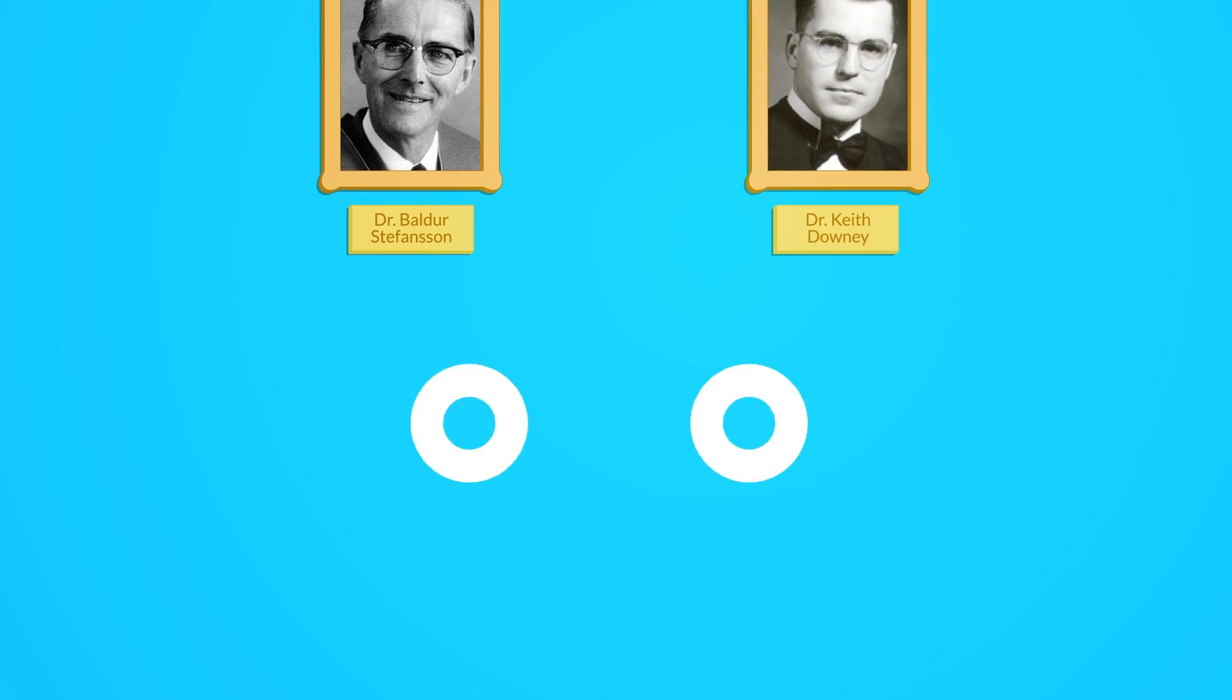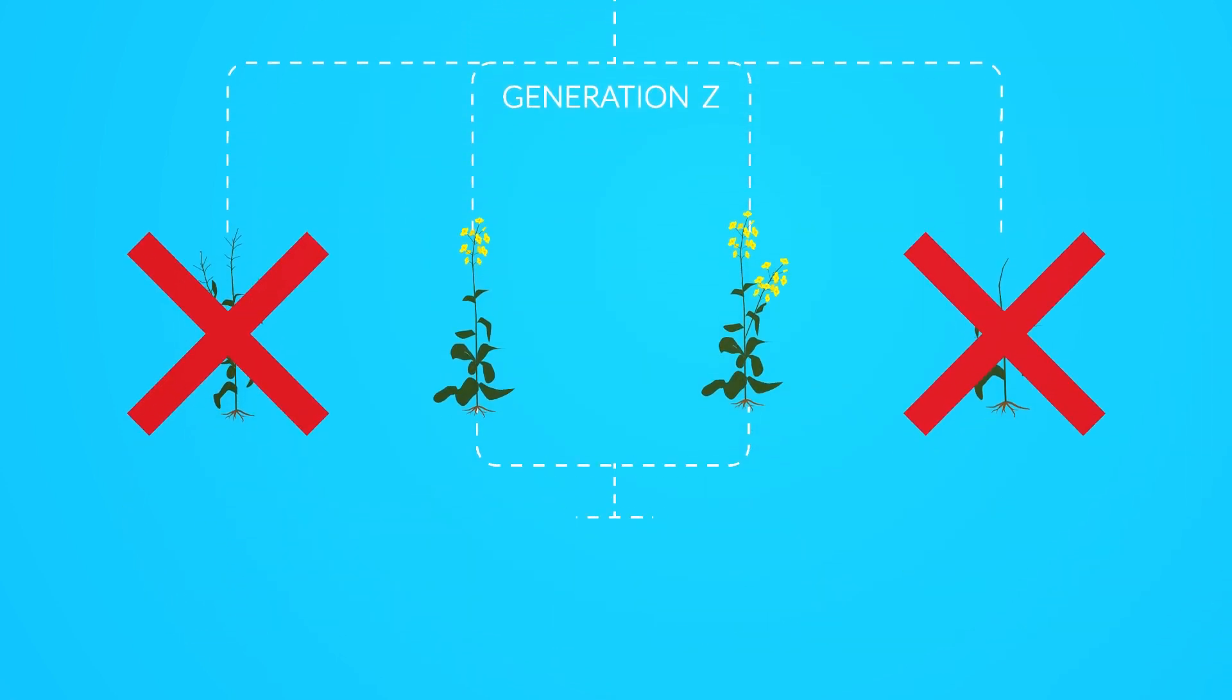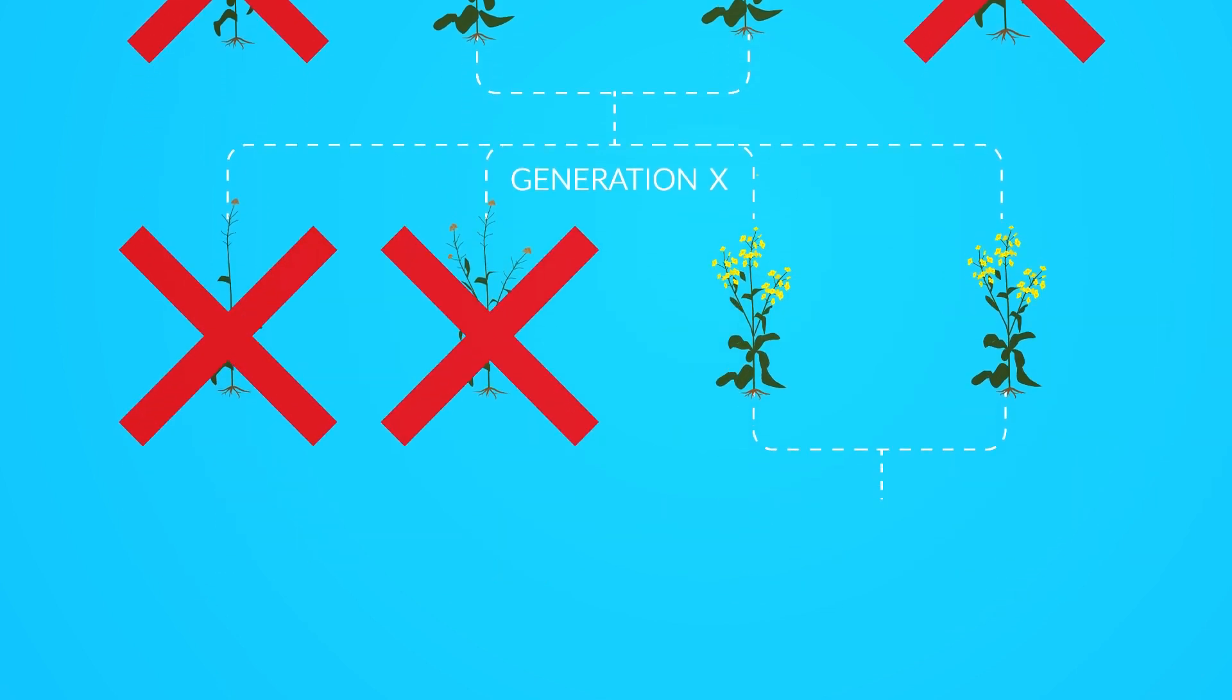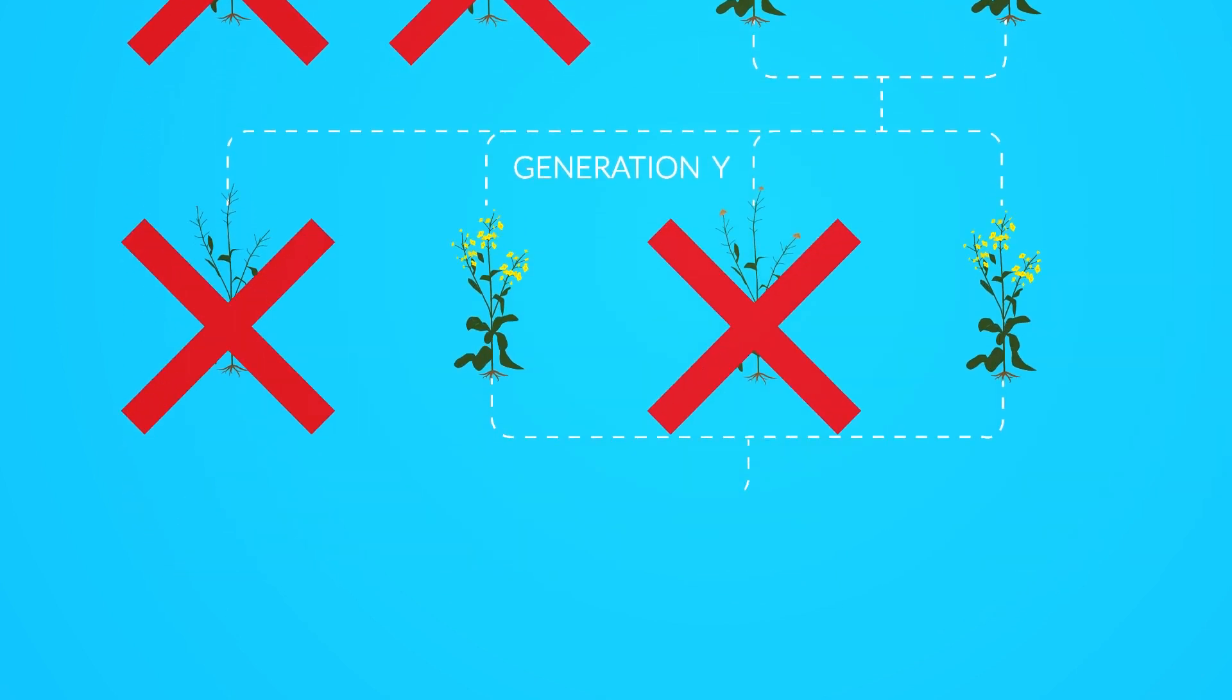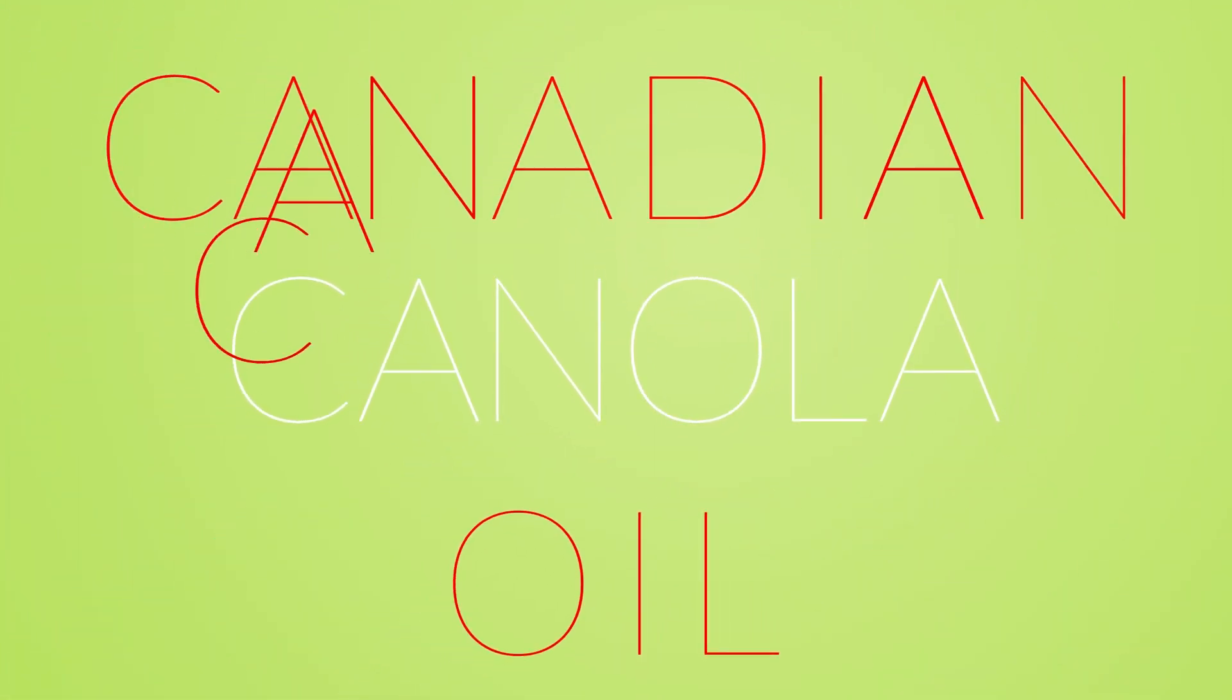Dr. Balder Stephenson and Dr. Keith Downey used traditional plant breeding methods to remove erucic acid and glucosinolates found in rapeseed, compounds that lack nutritional properties, leaving them with a new crop they called canola. The word canola is a combination of the words Canadian and oil.